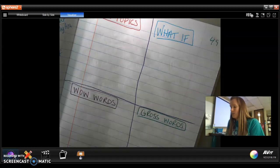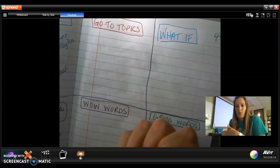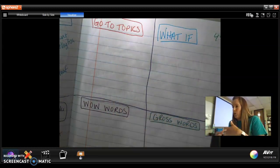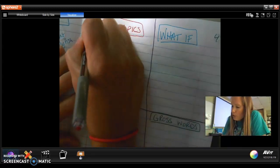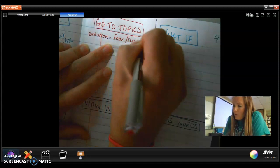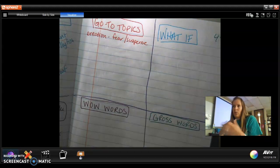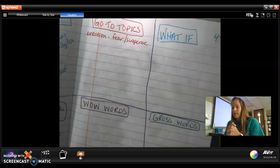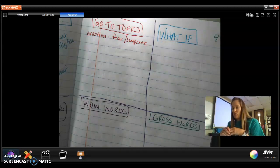So the go to topics box is when you're trying to write and you can't come up with an idea. You have some topics that would be ones that you kind of go back to over and over again. For example, I tend to go back to the emotion like fear or suspense. That is one of my favorite go-to's to write.